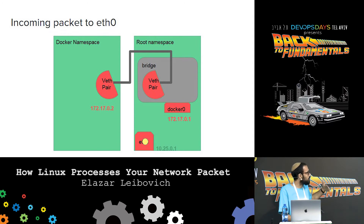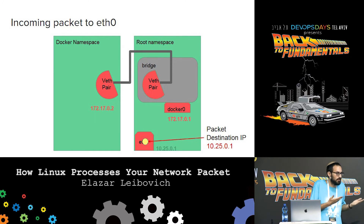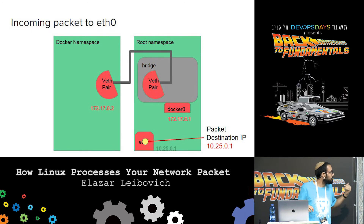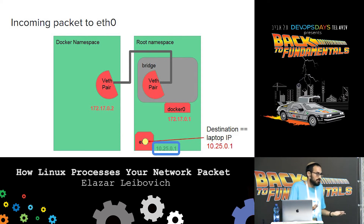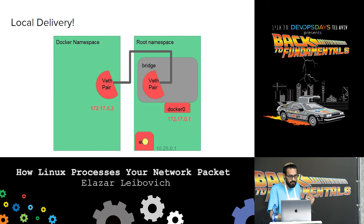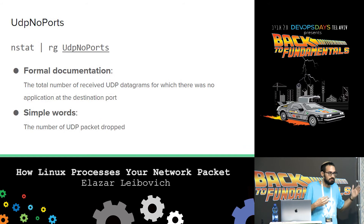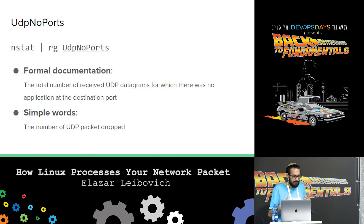So back to our problem. We get a packet to our IP because my boss doesn't know the internal IP of the container — he sends the packet to my laptop, that's what he knows. So we're getting a packet to, say, 10.25.0.1 — that's the IP of my network device. The kernel says, hey, this packet is for us, it tries local delivery. How can we diagnose that? There is an SNMP counter which we can inspect.